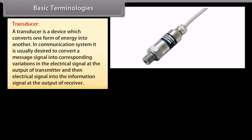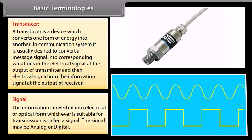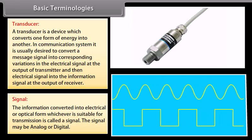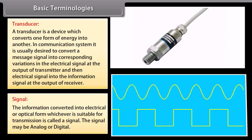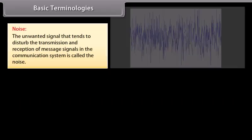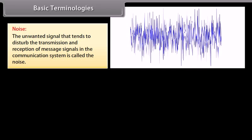Basic terminologies: A transducer is a device which converts one form of energy into another. In a communication system, it converts a message signal into corresponding variations in the electrical signal at the output of the transmitter, and then the electrical signal into the information signal at the output of the receiver. A signal is the information converted into electrical or optical form, whichever is suitable for transmission. The signal may be analog or digital. Noise is the unwanted signal that tends to disturb the transmission and reception of message signals.